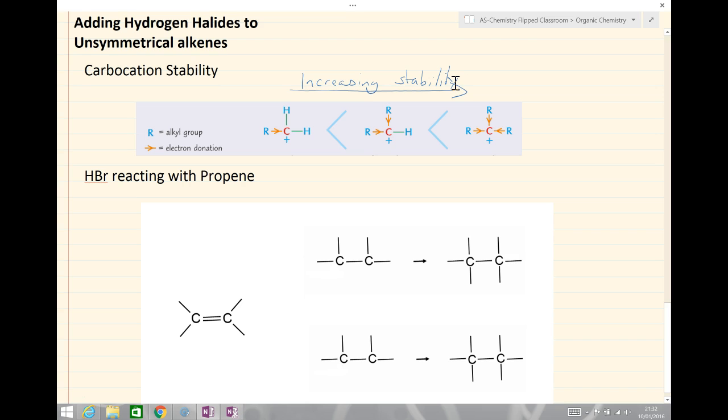These are also named in a particular way. This first one here, if we look at the carbocation, has got one alkyl group attached to it. If it's got one alkyl group, we call it a primary. We can denote that with a 1 with a degree sign up there. That's our primary carbocation.